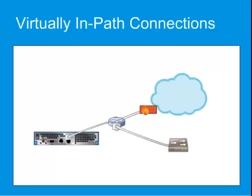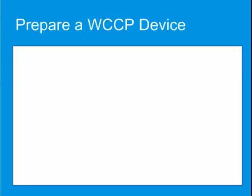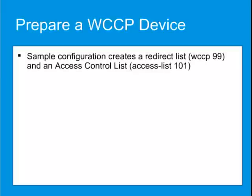Here is an example of the connections used in a virtually in-path deployment. Next, we'll look at a simple deployment consisting of one WCCP device and a single ProxySG appliance. The simplified steps here will prepare your Cisco device for WCCP redirection. This sample configuration involves creating a redirect list and an access control list to direct all Internet-bound traffic to the ProxySG.